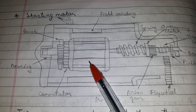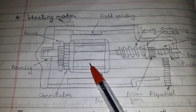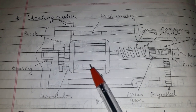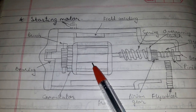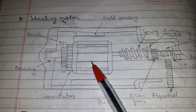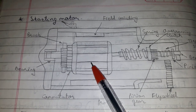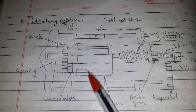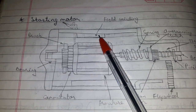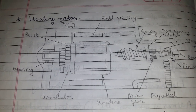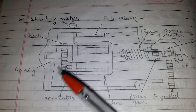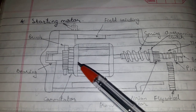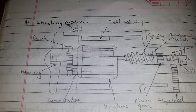The current flowing through the armature winding produces magnetism in the armature. This magnetism reacts with the magnetism of the field, thereby causing rotation of the armature.